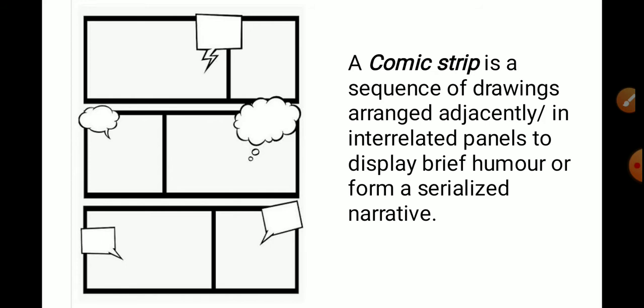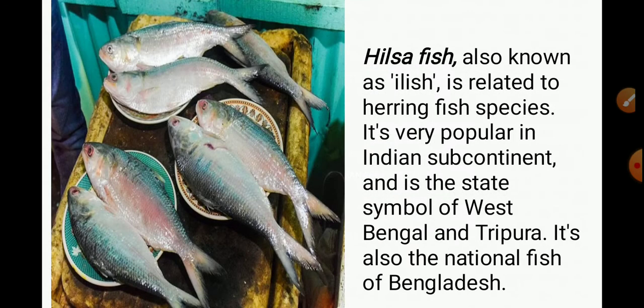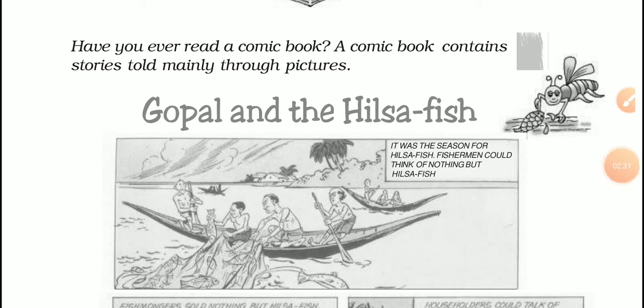The third important thing in this story is the Hilsa fish. It is also known in Bengali as 'Ilish.' It is a very popular fish across India. Interestingly, it is the state symbol of West Bengal and Tripura, and it is also the national fish of Bangladesh. Now let's start reading the actual story.